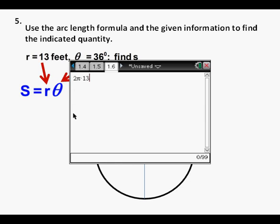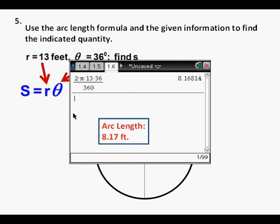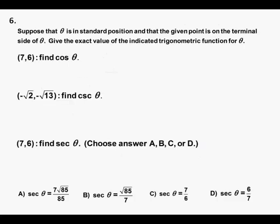To check, we can enter 2 pi r, with 13 for r, times the proportion of a circle, 36 over 360. We get 8.16814 again. So that checks out when we box in our earlier answer of 8.17 feet as correct.